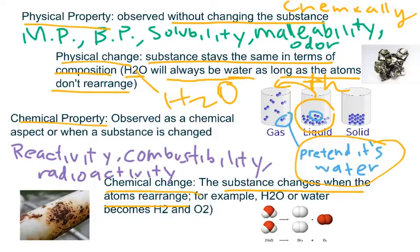Notice how boiling simply causes the water molecules to move faster, and because they move faster, they are able to leave the container, which is why gases don't have a definite shape nor volume. So as long as you have two blue dots stuck together, you are considered water, and if you are still considered water, you are still the same substance. That's why boiling is a physical change.